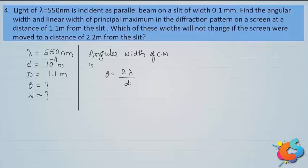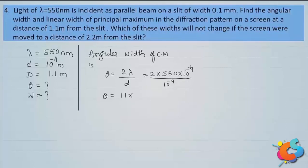The angular width of the central maximum is given by θ = 2λ/d. Substituting: θ = 2 × 550×10⁻⁹ / 10⁻⁴ = 2 × 5.5×10⁻⁷ / 10⁻⁴ = 11×10⁻³ radian. So the angular width of the central maximum is 11 milliradians.